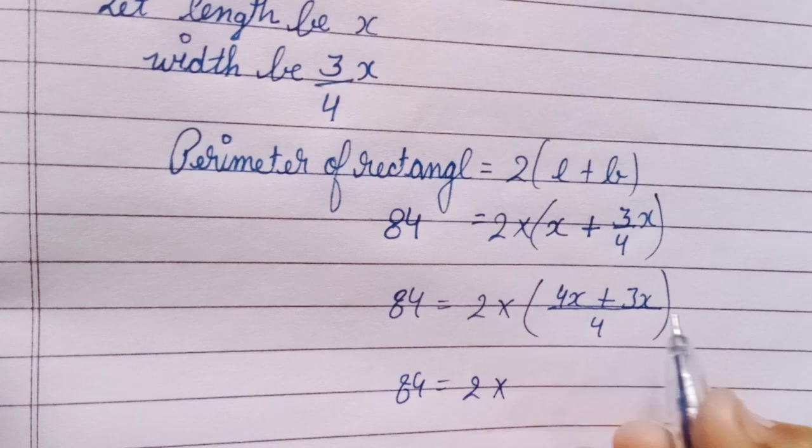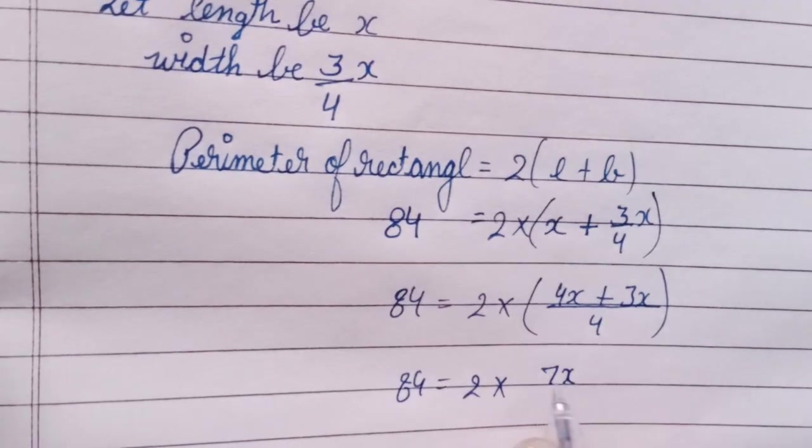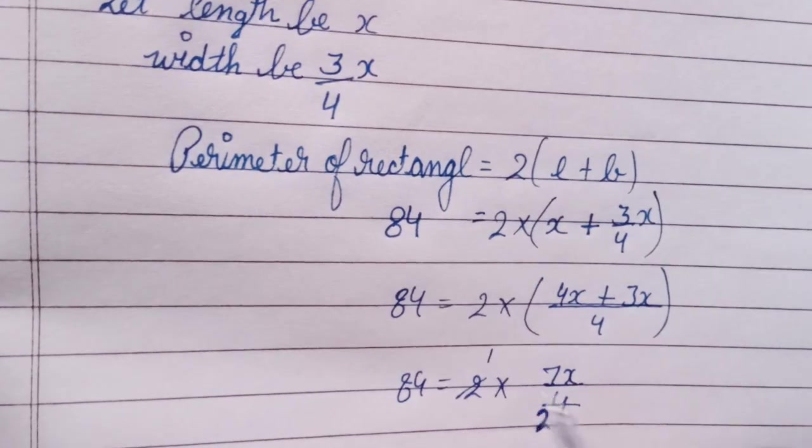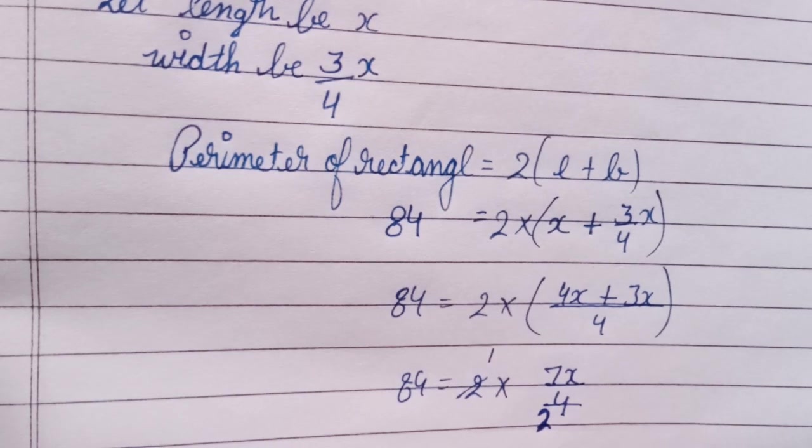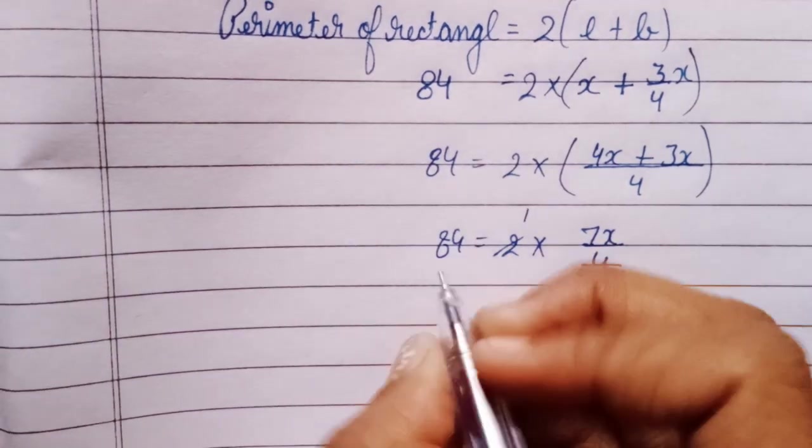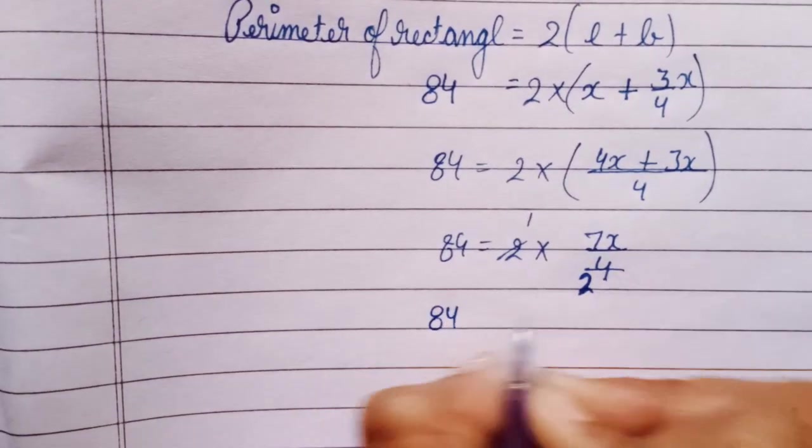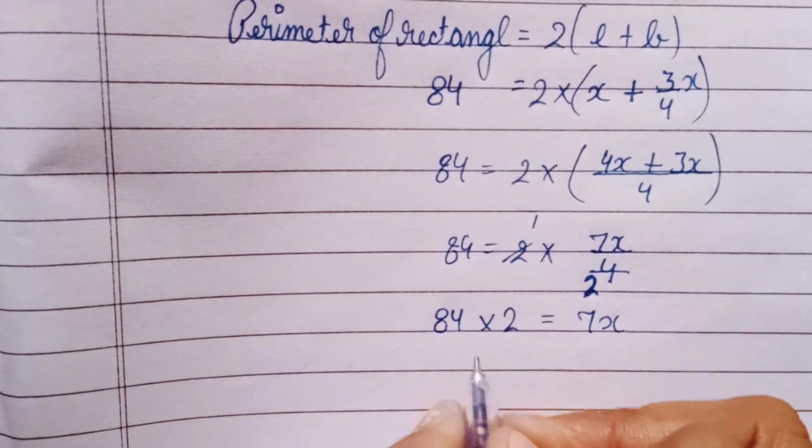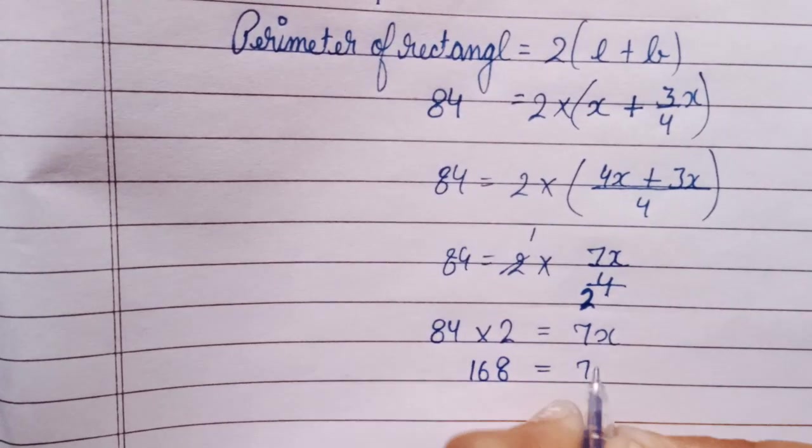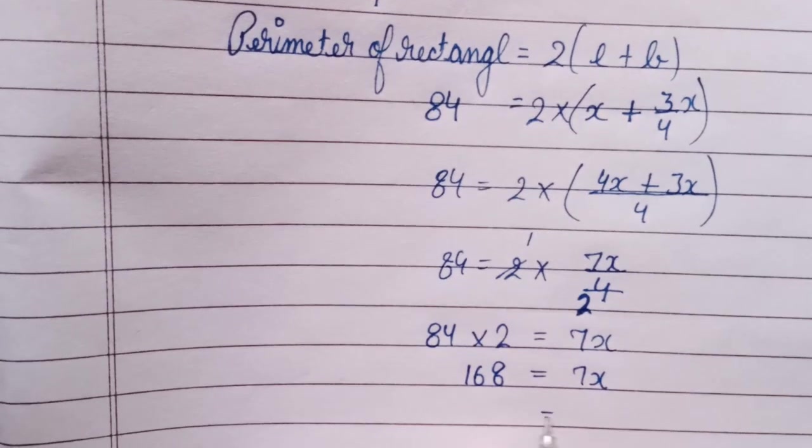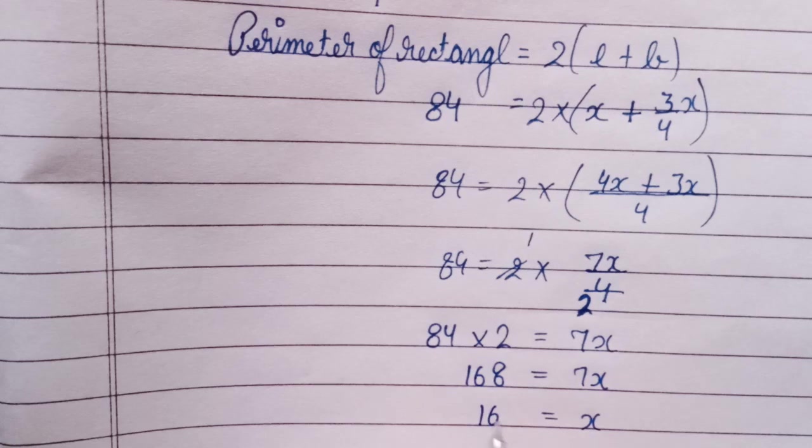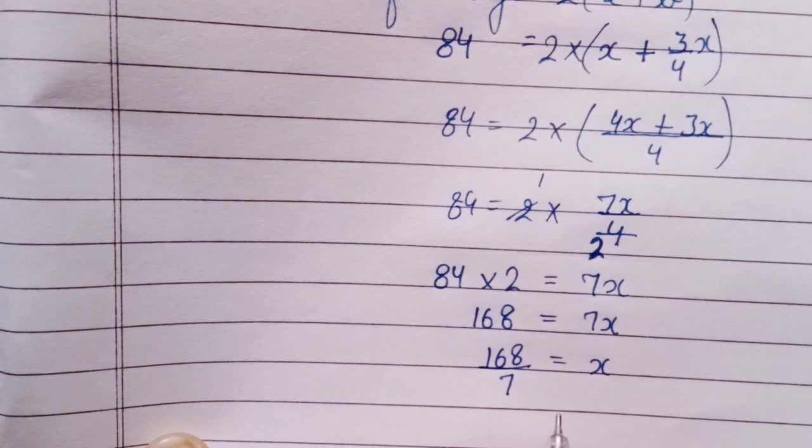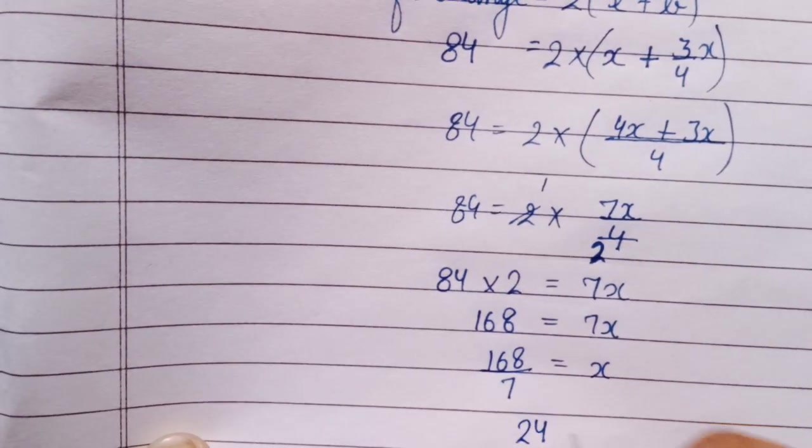2 into 4x plus 3x, we get 7x upon 4. And now 2 we can cancel: 2, 1; 2, 2. So 2 is now cancelled here. Now cross multiplication, that is 84 into 2 is equal to 7x. So 84 into 2 is equal to 168 is equal to 7x. It means the value of x is equal to 168 upon 7.